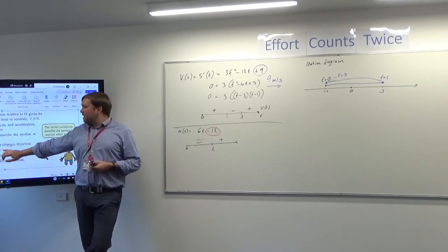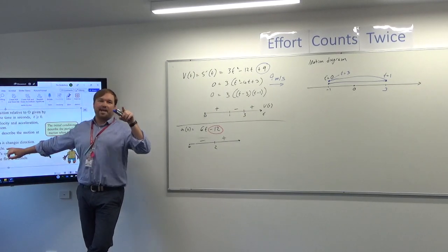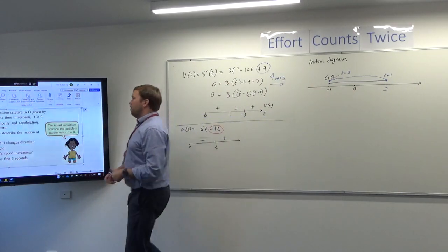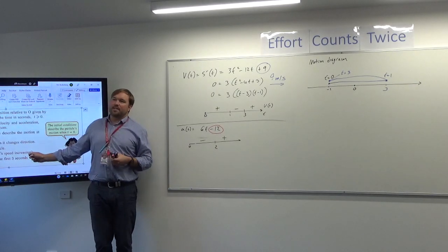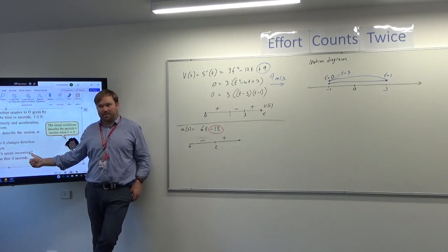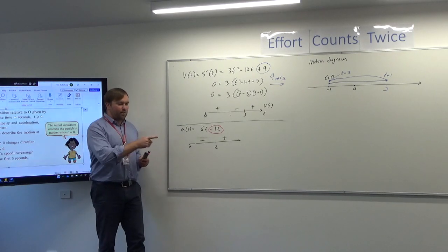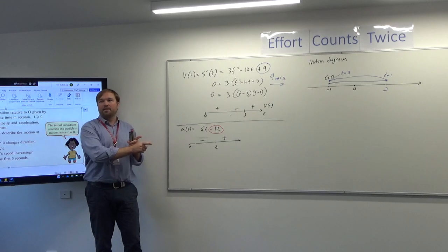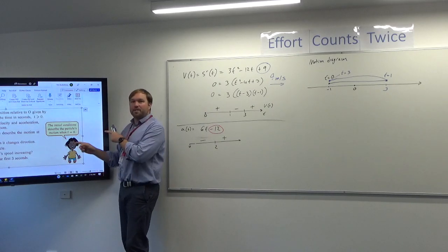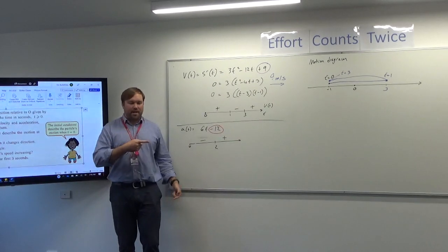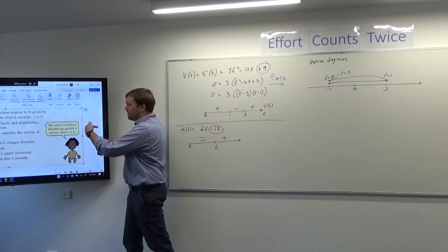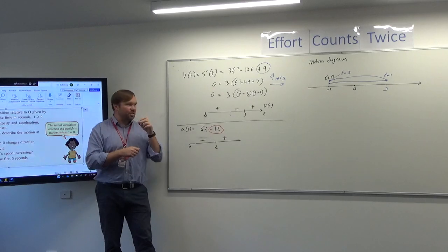Draw a motion diagram — that's what we've just done: showing the times and positions when the particle changes direction. It's gone from −1 to 3 and then back. For speed to be increasing, you need velocity and acceleration to work in the same direction. If you're traveling right and accelerating right, you speed up. If you're traveling left and accelerating left, you also speed up. If the signs are opposed — traveling one way and accelerating the other — you're slowing down.